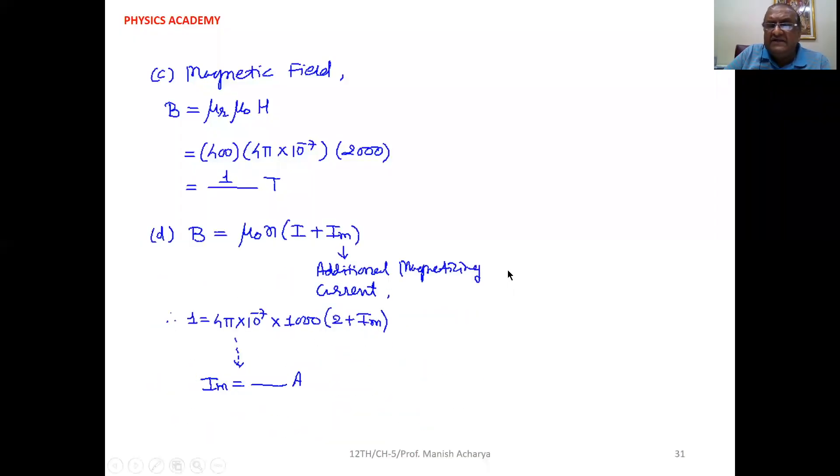Clear up to this one. Now see, the last question, additional magnetizing current means: due to the sample placed inside the solenoid with relative permeability μ_R, the resultant magnetic field B obtained is 1 tesla. Now the fourth question is like this: if this particular sample is not placed inside the solenoid and you still want the resultant magnetic field 1 tesla, then how much additional current do you have to pass through the solenoid?